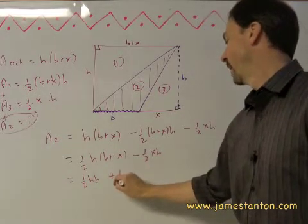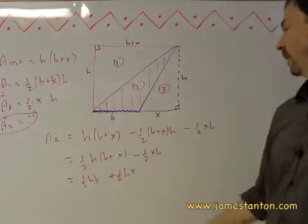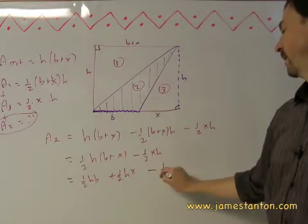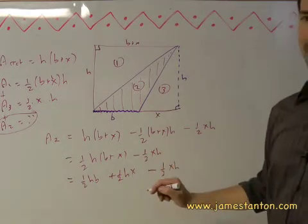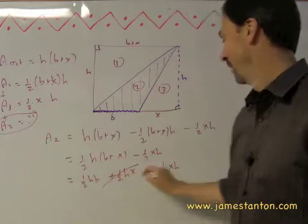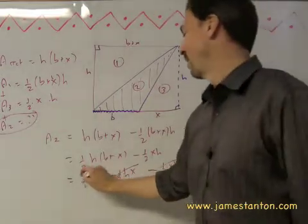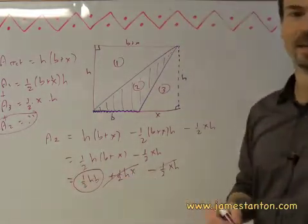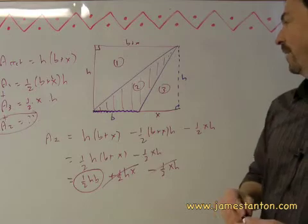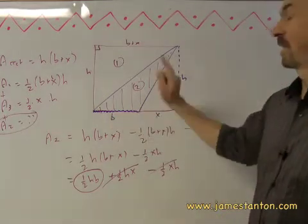Plus one half h times x. And I still have minus one half xh. But then something magical happens, look. They're identical. And I see the area of the triangle, again, is half base times height. So our formula works even for this type of triangle.